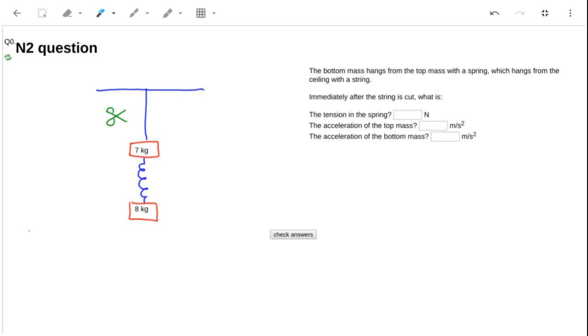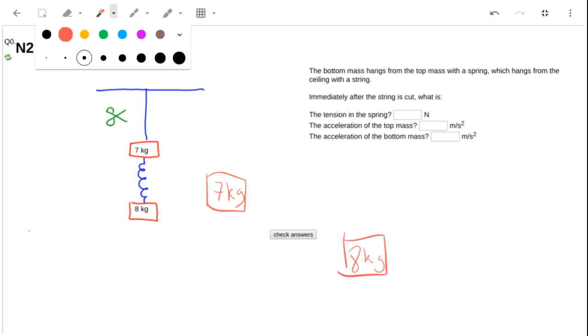Here's another one that requires a free body diagram to begin with. I've got a seven kilogram mass here and an eight kilogram at the bottom. I'll draw in the forces to begin with. I have the weight 8g and 7g.